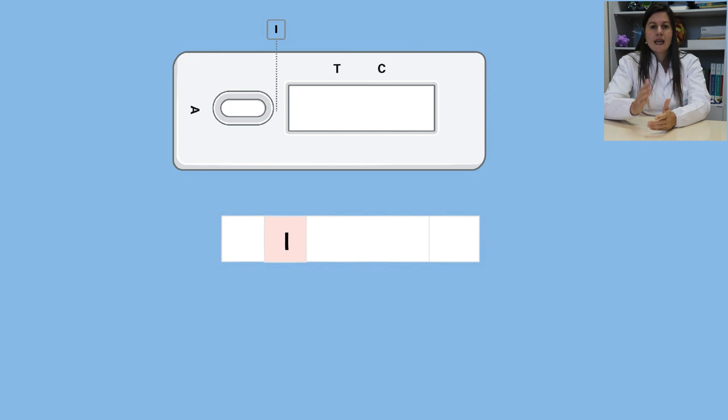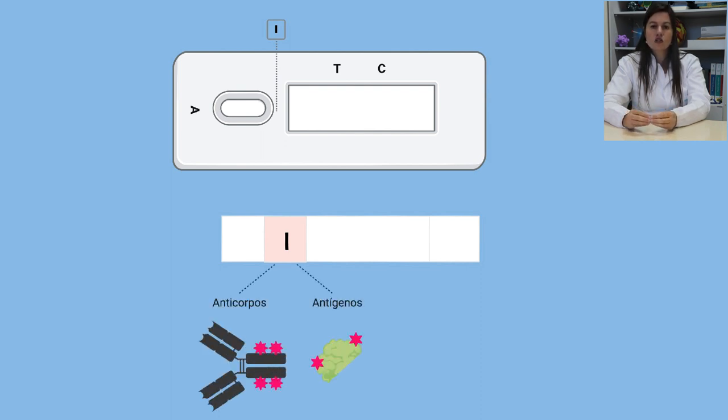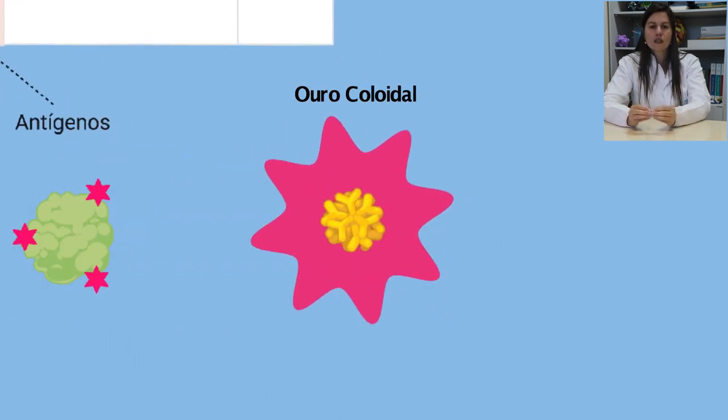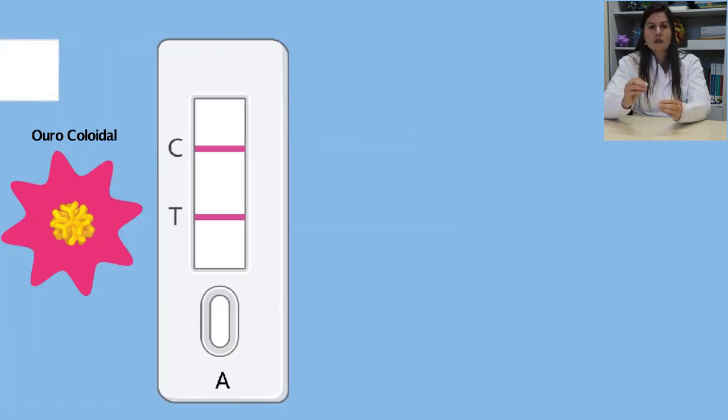A outra área é a área intermediária, aqui indicada como área I, que é onde fica o suporte do conjugado, que pode conter impregnado a seco anticorpos ou antígenos ligados a nanopartículas de ouro ou prata coloidal. Por isso, o nome conjugado. O ouro coloidal é de cor rosa e a prata coloidal é de cor azul. E eles vão funcionar como corantes insolúveis que permitirão a visualização do resultado do teste.